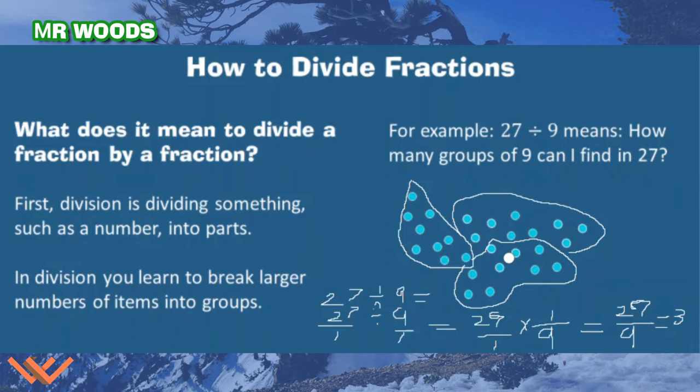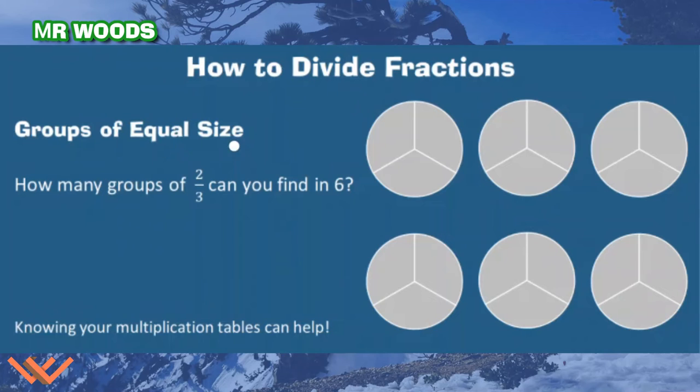But let's look a little bit deeper into these fractions. We have groups of equal size. So we have 1, 2, 3, 4, 5, 6 circles broken up into thirds because it's 1, 2, 3, 3 pieces. So 3 thirds. How many groups of 2 thirds can you find in 6? Let's take a look here.